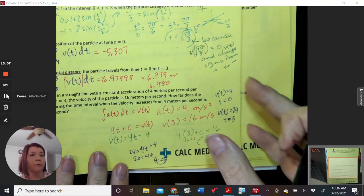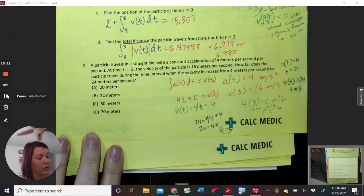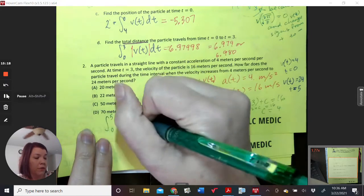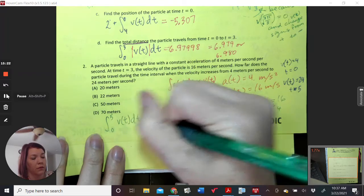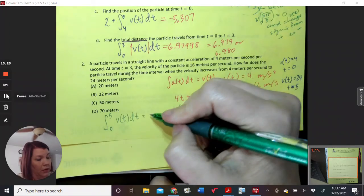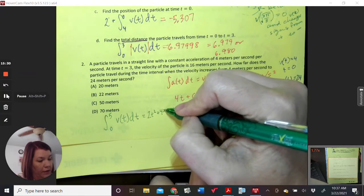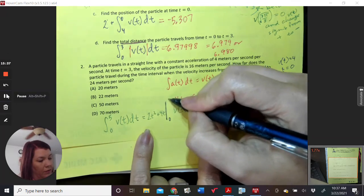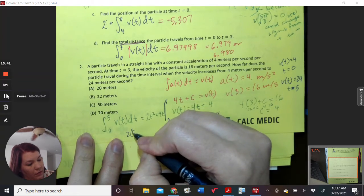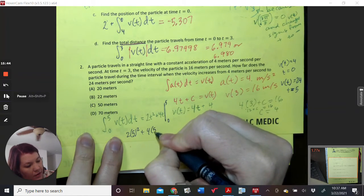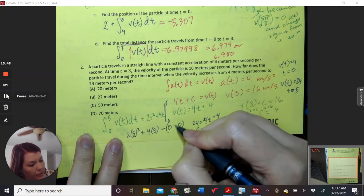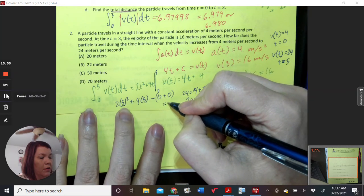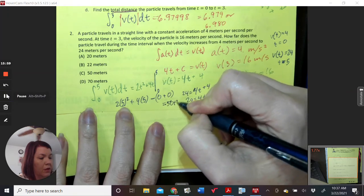Then, now we do the interval. The interval from 0 to 5 of V of t. So the interval is 2t squared plus 4t, evaluated from 0 to 5, which gives me 2 times 5 squared plus 4 times 5 minus 0. Like any 0 is going to give me 0 on both of those, which is equal to 50 plus 20, or 70. There you go.